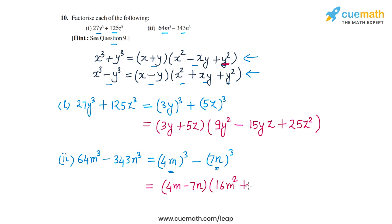So that's 4m times 7n or 28mn, plus y², which is (7n)² or 49n².